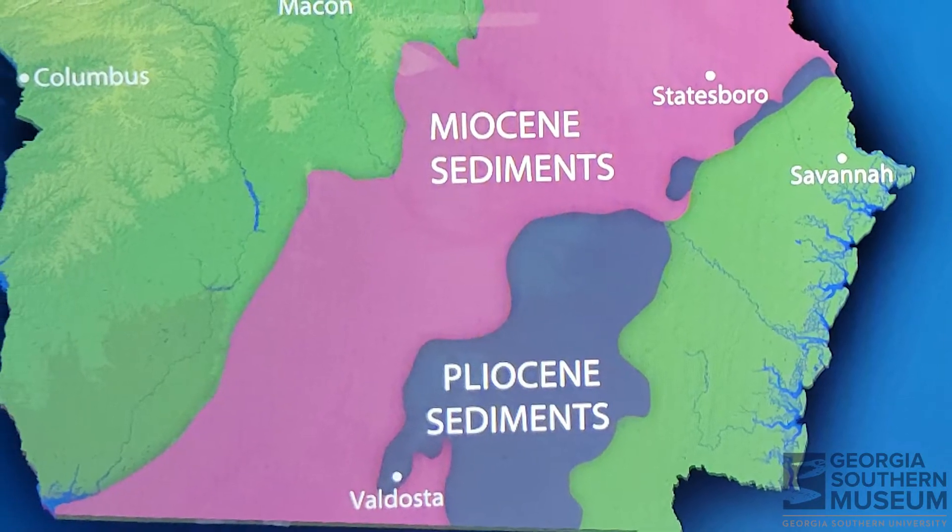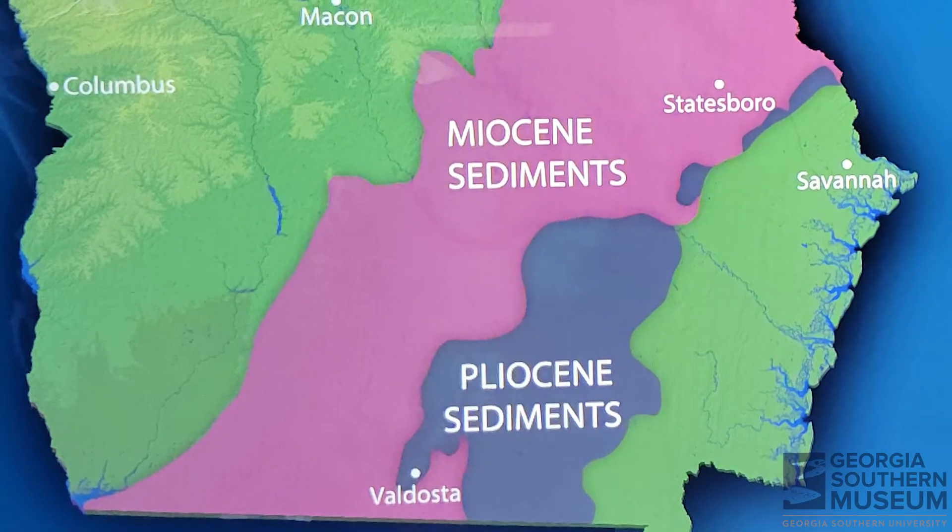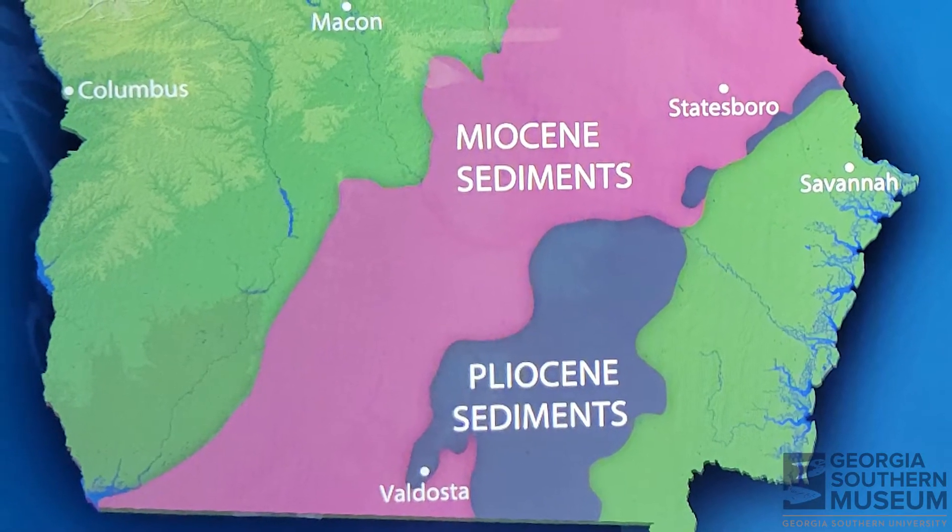Everywhere from the coast to what is now Valdosta and Statesboro would have been underwater. Living turritellians are mostly immobile filter feeders that live in soft sediments, but they can be found in a variety of depths and salinities. They're eaten by a number of different predators and can be infected with a lot of different parasites. Recent research suggests that their reproduction depends on them being abundant, which could explain why they're found in high numbers both today and in the past.